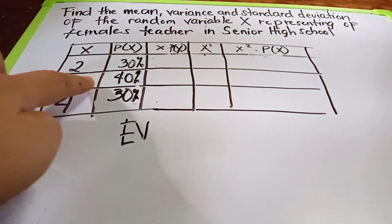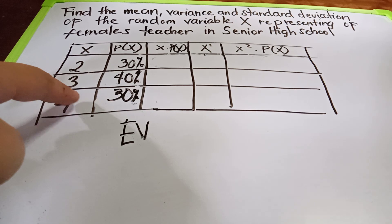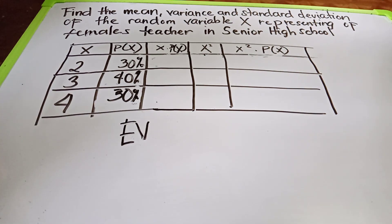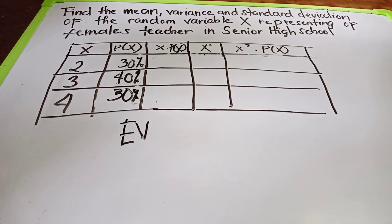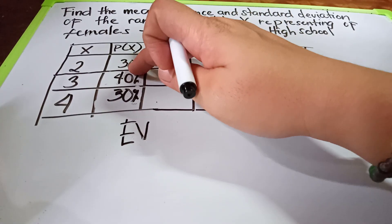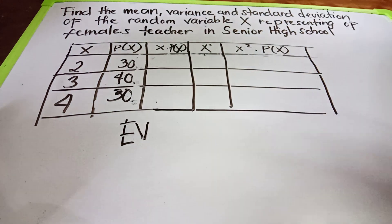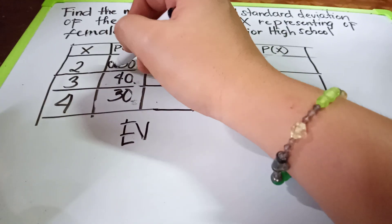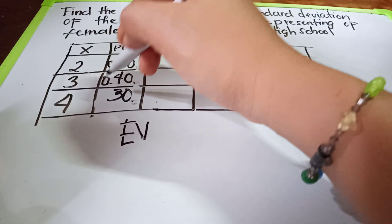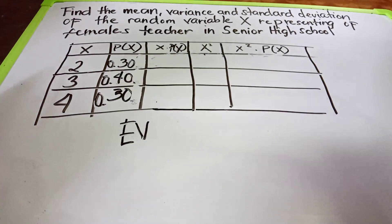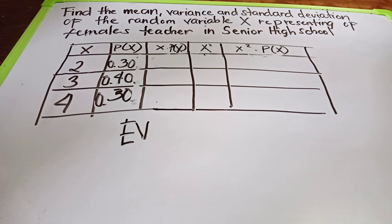For X equals two, we have 30 percent; for three, we have 40 percent; and for four, we have 30 percent. To work with these, we change the percentages to decimal form: 30% becomes 0.30, 40% becomes 0.40, and 30% becomes 0.30.